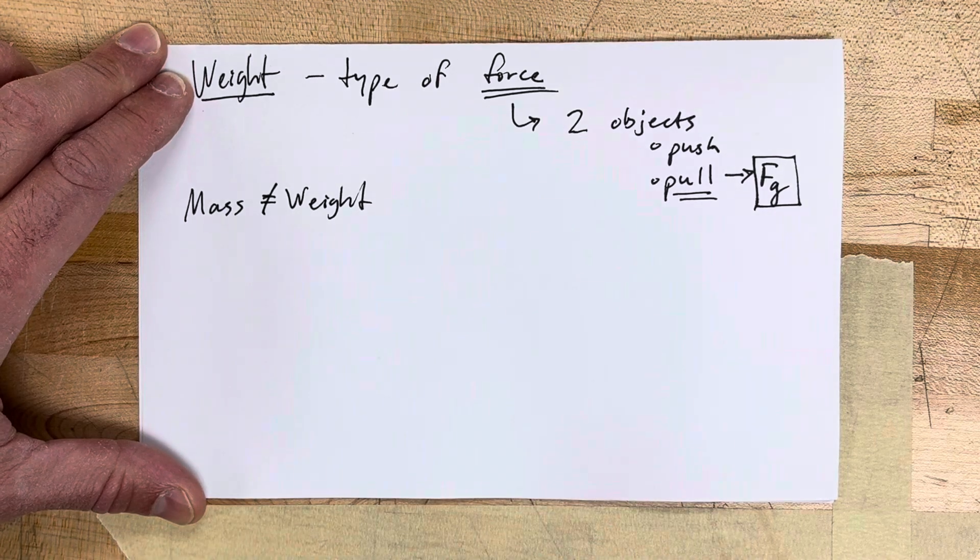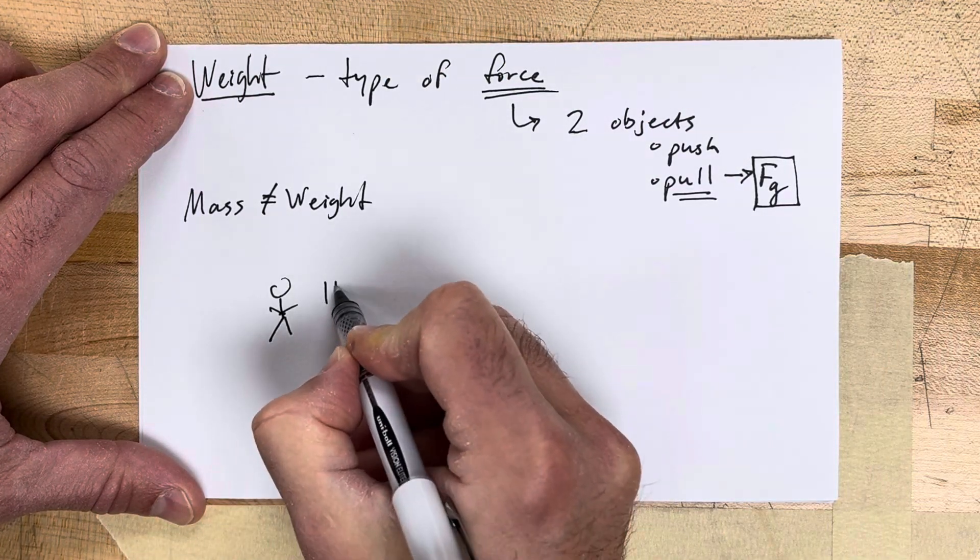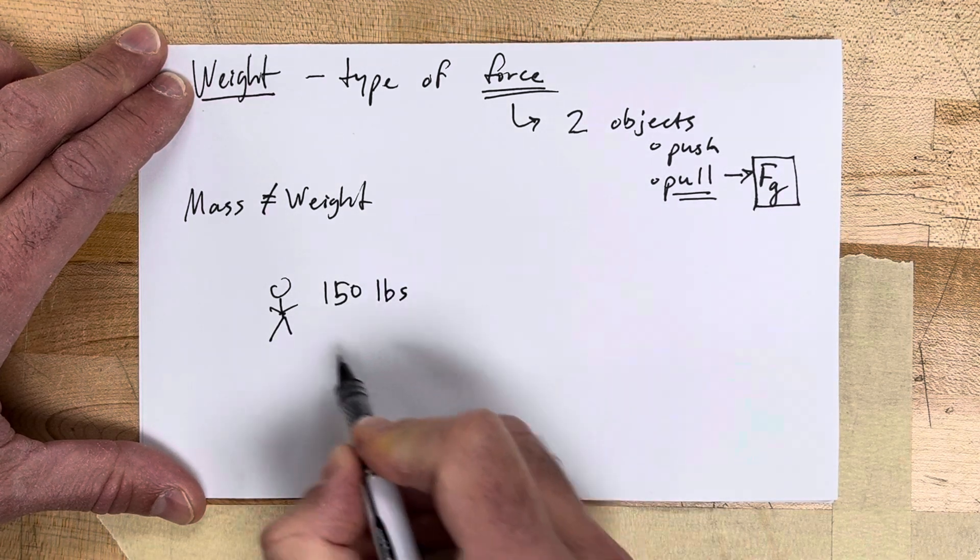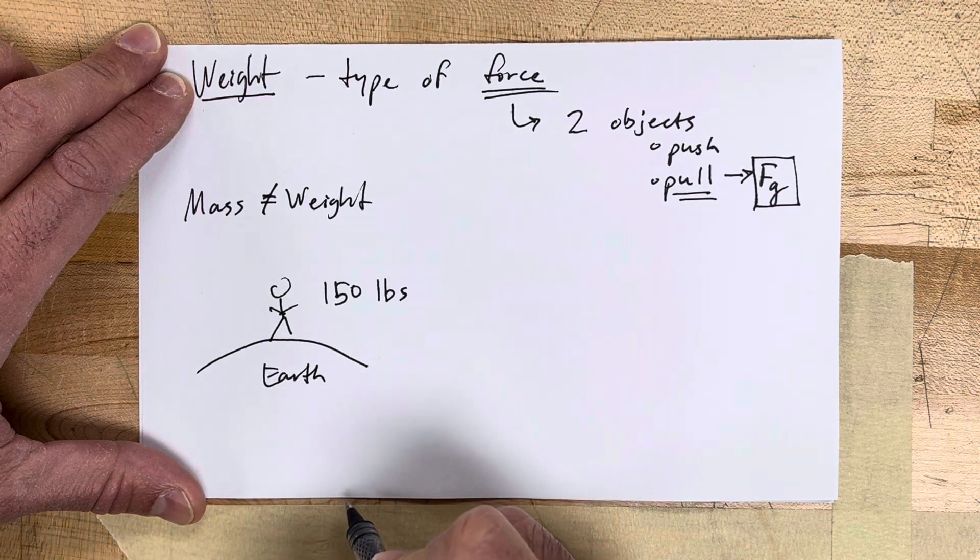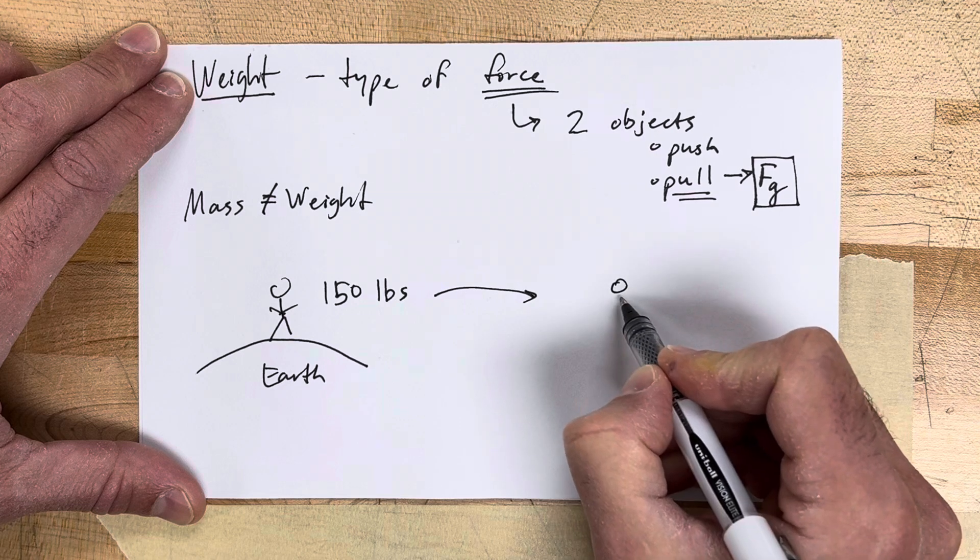Let's take a person for example. Let's say you've got a person right here that weighs 150 pounds. Well, where do they weigh 150 pounds? They weigh 150 pounds on the Earth. If you took that same person and they traveled to the moon...